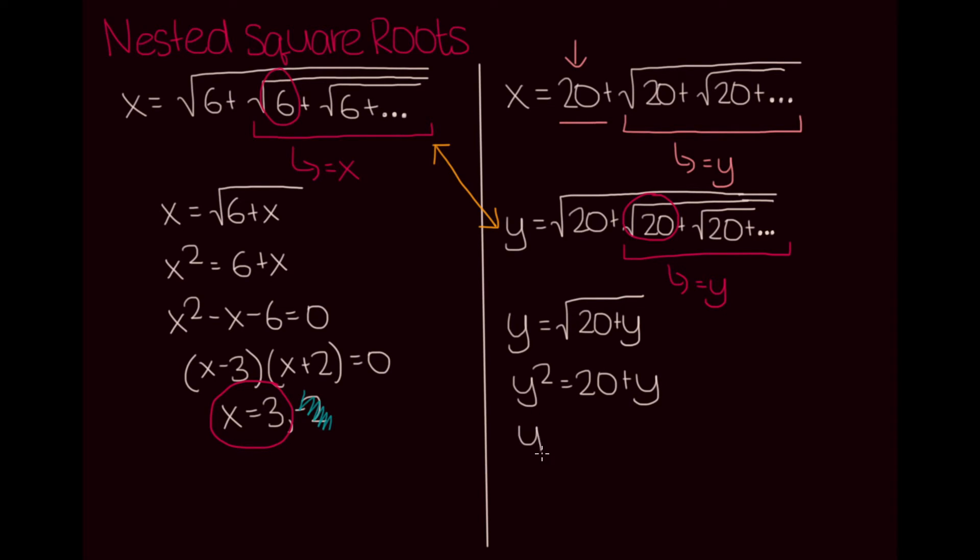Bringing all the terms to the left-hand side, we get y squared minus y minus 20 equals 0. If we factor this, we get y minus 5 times y plus 4 equals 0.